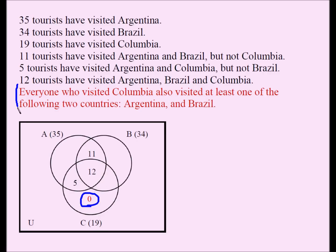So those are the numbers gathered directly from the data. Now, the four regions of Argentina must sum to 35. We know three of them: 11 plus 12 plus 5 equals 28. Subtracting 28 from 35 gives us 7, which is the number of tourists who visited Argentina only.